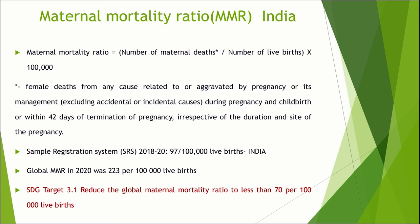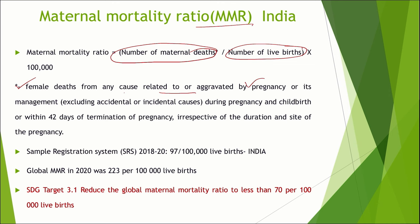Let us look at maternal mortality ratio. Maternal mortality ratio is the ratio of total number of maternal deaths to the total number of live births, multiplied by 1 lakh. Maternal death is defined as any female dying from any cause related to or aggravated by pregnancy or its management, excluding accidental or incidental causes, during pregnancy and childbirth or within 42 days after termination of pregnancy. According to the Sample Registration System (SRS) 2018-20 report, India's current maternal mortality ratio is 97 maternal deaths per 1 lakh live births. The global MMR in 2020 was 223 per 1 lakh live births. The SDG target 3.1 aims to reduce global maternal mortality ratio to 70 per 1 lakh live births.